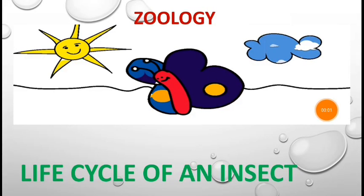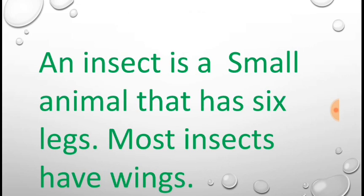Hello kids, welcome to another learning video. Today we are looking at the subject zoology. The topic is life cycle of an insect. What is an insect? An insect is a small animal that has six legs. Most insects have wings.